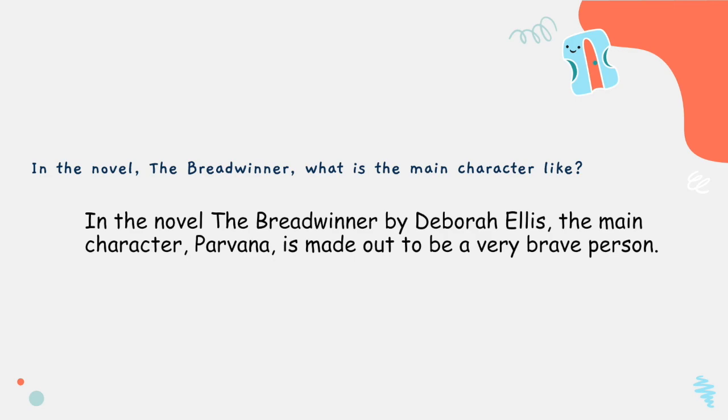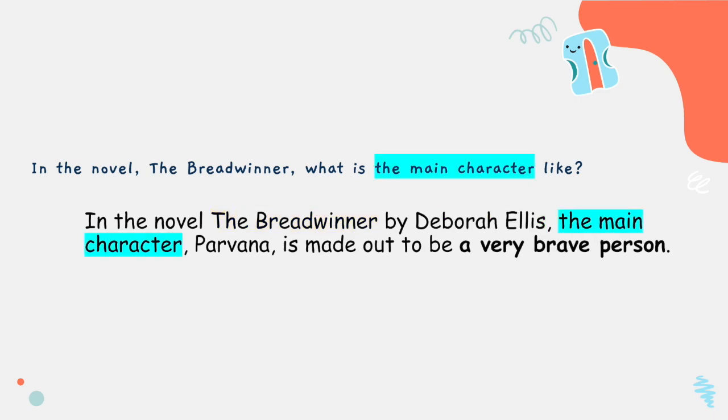It reads: in the novel The Breadwinner by Deborah Ellis, the main character Parvana is made out to be a very brave person. In this point, you can see that we've mentioned the text title and the author's name.